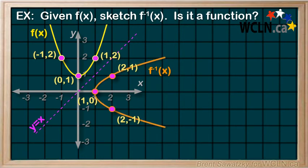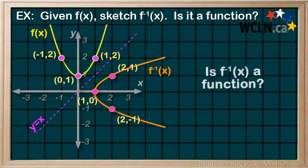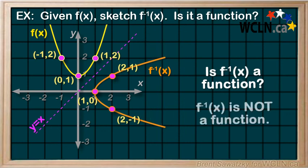Now, we were also asked if the result is a function. Well, let's consider our vertical line test. We can touch the curve more than once at multiple locations here. And therefore, while the original f(x) was a function, the inverse is not a function.